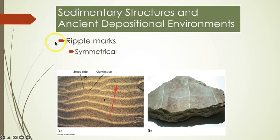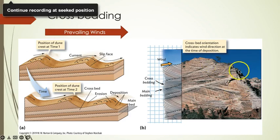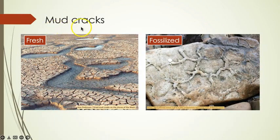Symmetrical ripples form where there is an oscillating current, like the surf zone of the ocean. The steeper side of asymmetrical ripples indicates the direction from which the current was flowing. Crossbeds are large asymmetric ripples that form from sand dunes. Mud cracks are formed when mud dries and contracts, causing it to crack into a honeycomb-like pattern.